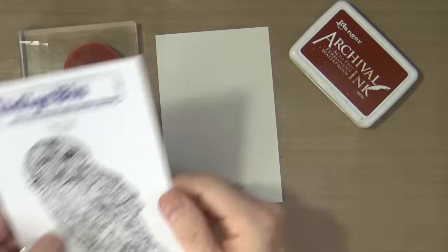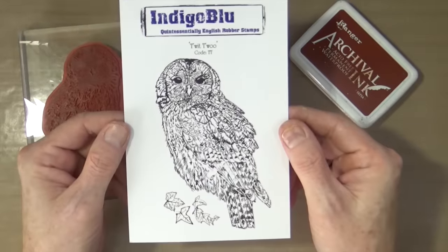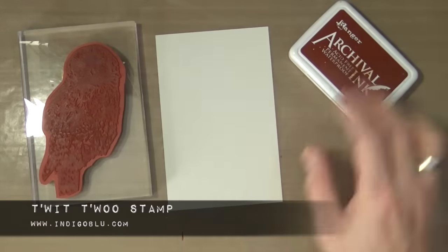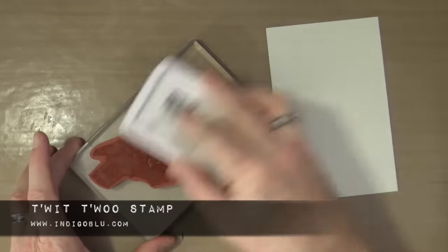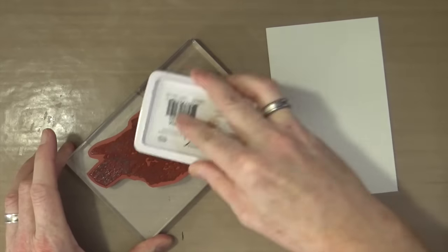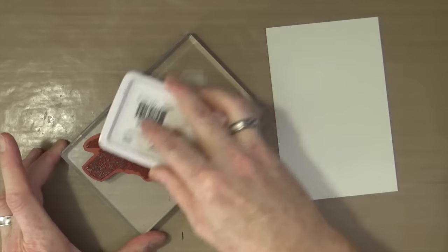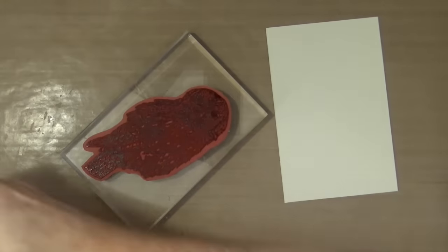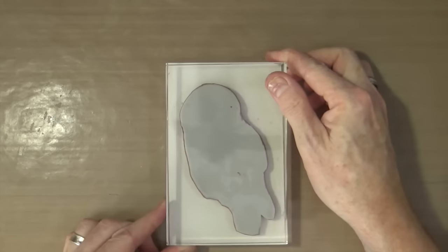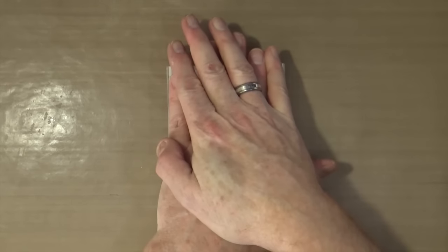For my next focal point on my canvas, I'm going to be using the twit twoo owl stamp from Indigo Blue. This is an A6 stroke and A2 sized stamp, so it's a very good size. I'm going to ink it up using the very same sepia archival ink and stamp that onto a piece of off-white cardstock.